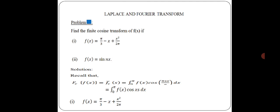There are many problems of Fourier series and Fourier transforms. Now we discuss two problems. First problem: find the finite cosine transform of f(x), where first one is f(x) = π/3 - x + x²/2π, and second one is f(x) = sin(nx).